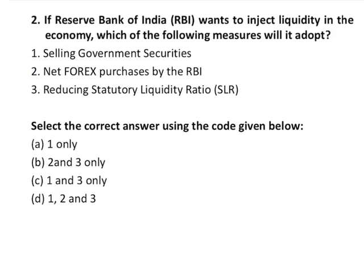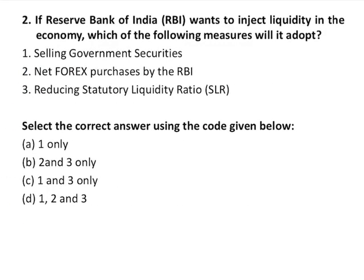Moving to question number two: if RBI wants to inject liquidity in the economy, which measures will it adopt? Selling of government securities is not the option — rather, the purchase of government securities by RBI increases liquidity as it releases money among the public. Net forex purchased by RBI is correct — it will inject liquidity. Reducing SLR, the statutory liquidity ratio, is also correct and will inject liquidity in the market. So options 2 and 3 are correct, that is option B.